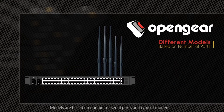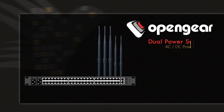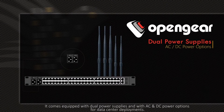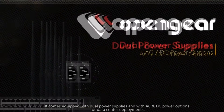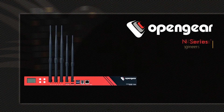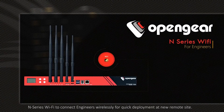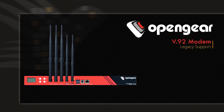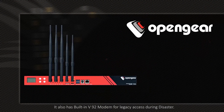Models are based on number of serial ports and type of modems. It comes equipped with dual power supplies and AC and DC power options for data center deployments. The N-series offers Wi-Fi to connect engineers wirelessly for quick deployments at new remote sites, and it also has a built-in V.92 modem for legacy access during a disaster.